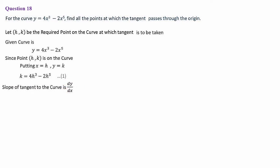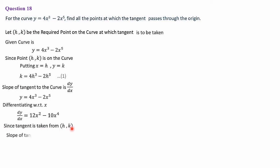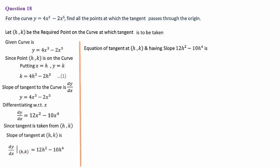Differentiating y = 4x³ − 2x⁵: dy/dx = 12x² − 10x⁴. The slope of the tangent at (h, k) is dy/dx at (h, k) = 12h² − 10h⁴. The equation of the tangent at (h, k) with this slope using point slope form: y − k = (12h² − 10h⁴)(x − h).